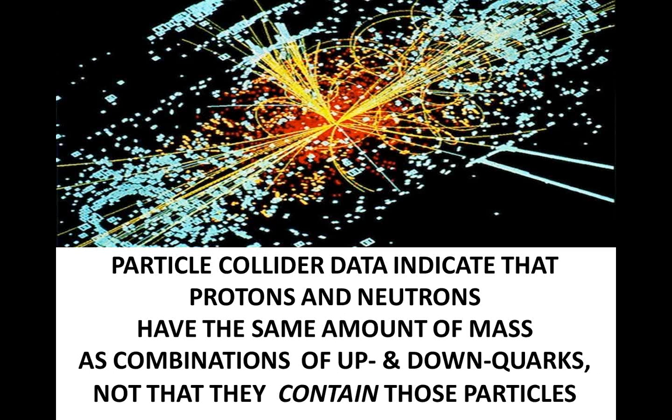Confusing equivalence with identity leads to subtle errors, like the one pointed out in the previous video. Particle collider data indicate the protons and neutrons have the same amount of mass as combinations of up and down quarks, not that they contain those particles. Confusing equivalence with identity leads to imagining that there are discrete entities called up and down quarks existing within protons and neutrons. This simply is not the case.